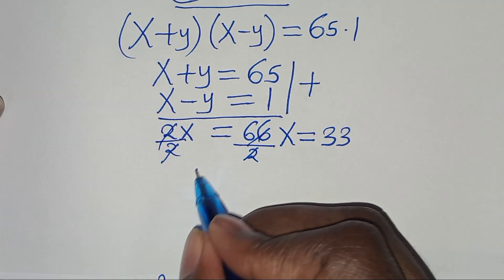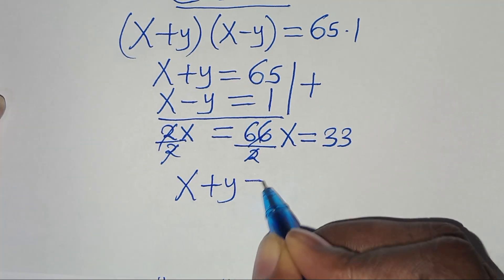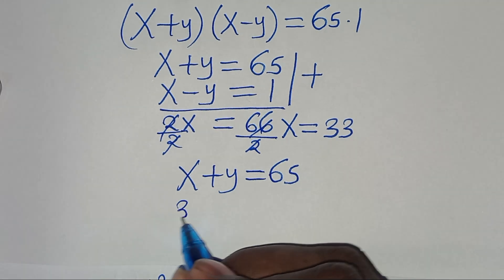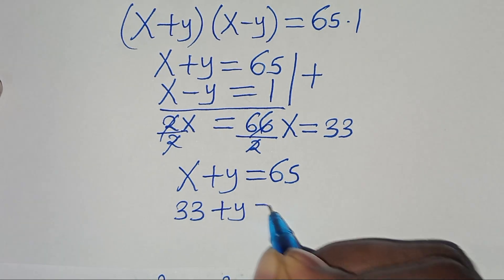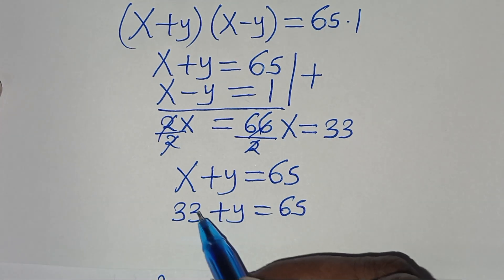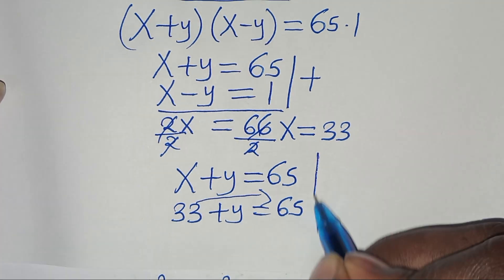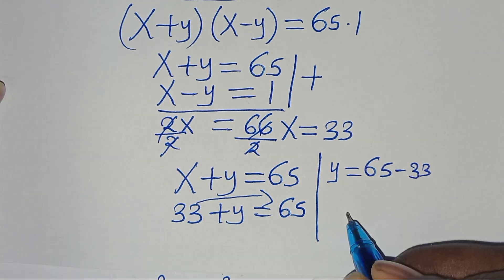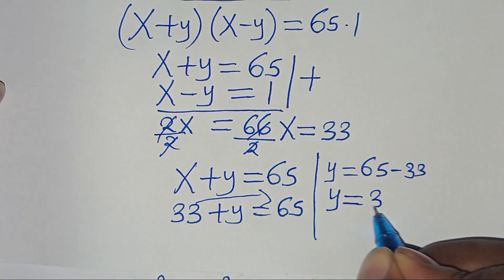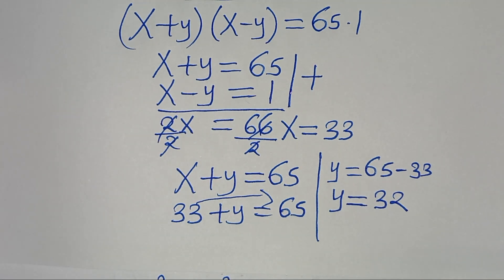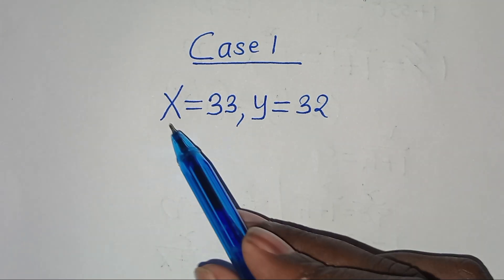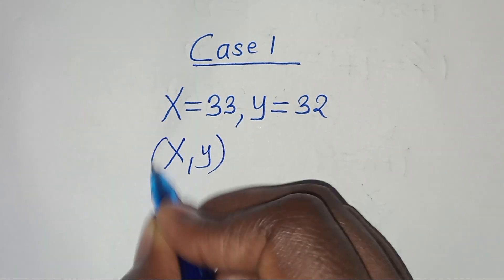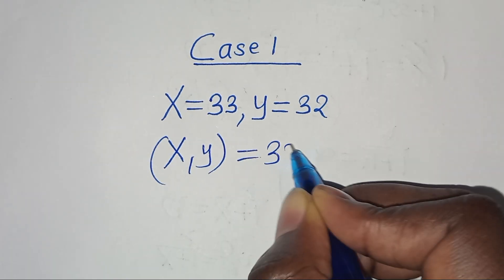Now substituting x equals 33 into x plus y equals 65, we get 33 plus y equals 65. Taking 33 to the right-hand side, y equals 65 minus 33, which means y equals 32. So in case 1, x equals 33 and y equals 32, giving the solution (x, y) = (33, 32).